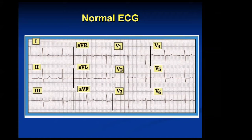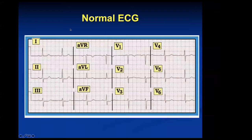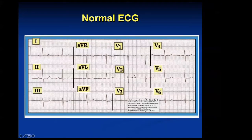Leads 2, 3, and AVF are inferior — that's usually more RCA. Anterior would be V3 and V4, septal V2, although that's really prone to lead placement and so forth. So those are the territories, just reviewing that for you guys when we look at some coronary arteries.